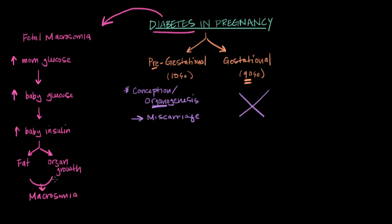In pre-gestational diabetes — diabetes before the point of pregnancy — the impaired glucose control is more longstanding. These women are more likely to have diabetic complications such as kidney damage, vascular problems, and damage to the retina. Pregnancy can aggravate these complications and make them worse, so it's really important to monitor these conditions throughout the pregnancy.